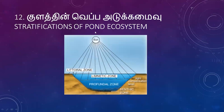Stratification of the pond ecosystem: limnetic zone, littoral zone, and profundal zone. The layers include epilimnion and hypolimnion. In the stratification, there is maximum light penetration in the upper zone.